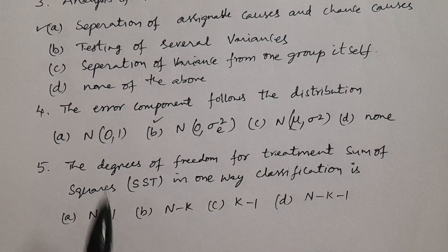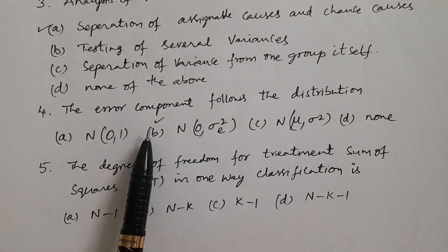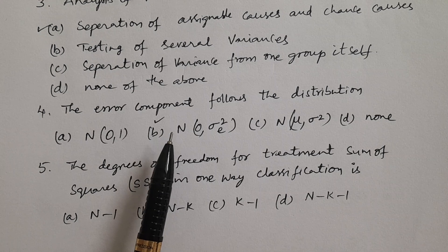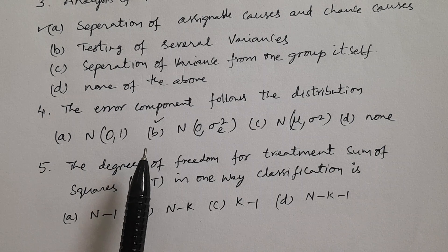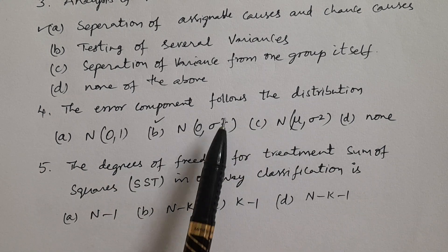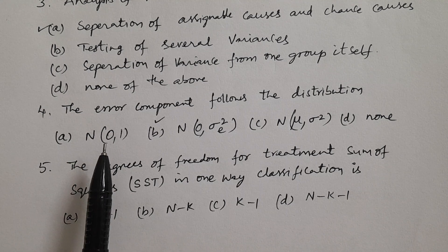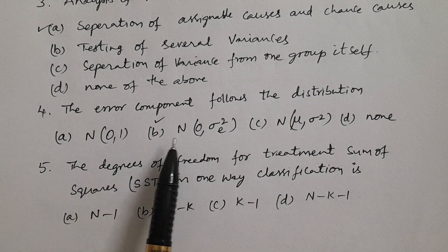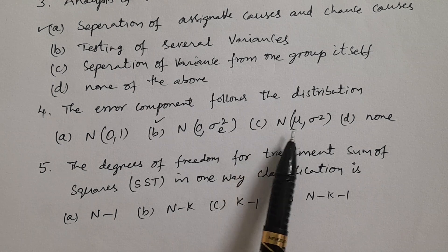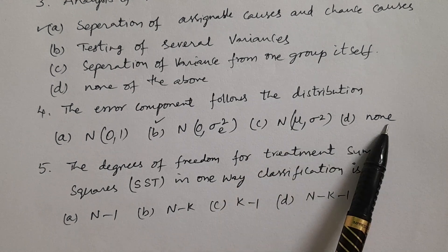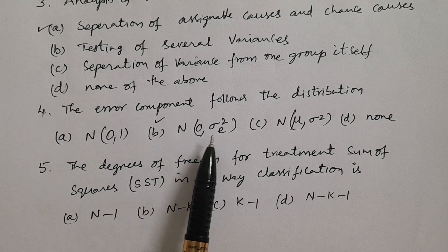Question number four: The error component follows which distribution? This is one of the most important points in ANOVA and Design of Experiments. Options: A. N(0,1) — Normal distribution with mean 0 and variance 1, B. N(0, σ²) — Normal distribution with mean 0 and variance sigma square, C. Normal distribution with mean mu and variance sigma square, D. None of These. The answer is B — N(0, σ²), normal distribution with mean 0 and variance sigma square.